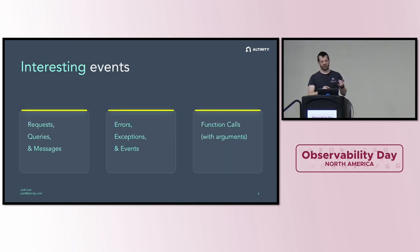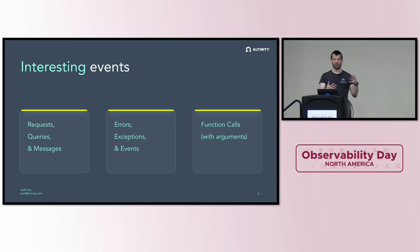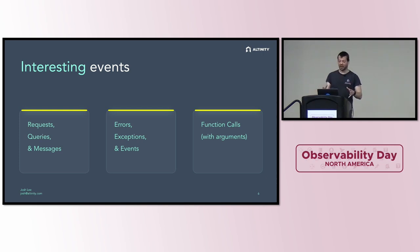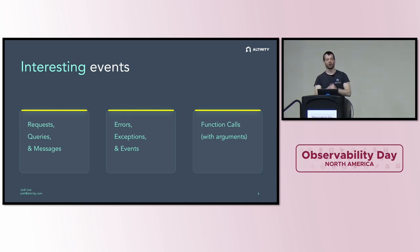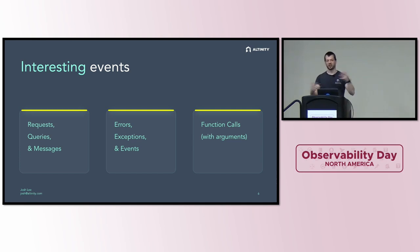What are those interesting things? In OpenTelemetry, most of the time we're talking about requests, queries, and messages — things happening on the network, but observed from inside the application, not from the network layer. We're also interested in errors, exceptions, and events. And we're interested in specific function calls with their arguments — not all function calls, because that would be profiling. Functions are really our hook for instrumentation, whether automatic or manual.